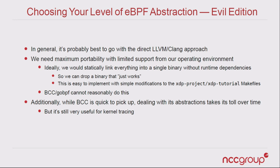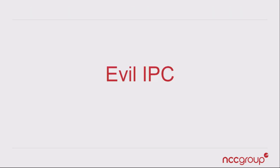BCC and go-BPF can't reasonably do this kind of thing — I just want to drop a binary, not have an extended everything. BCC is really useful to get started with a lot of this stuff and for kernel tracing, but it doesn't support all the kernel tracing APIs I'll actually be talking about today. So let's talk a little bit about doing bad things with IPC — obscuring communications, leading people astray, and sending data without sending it and reading data without reading it.